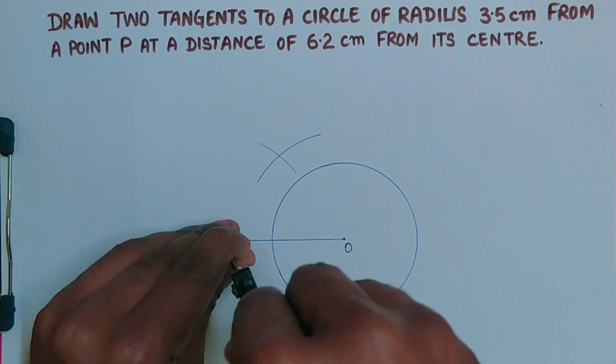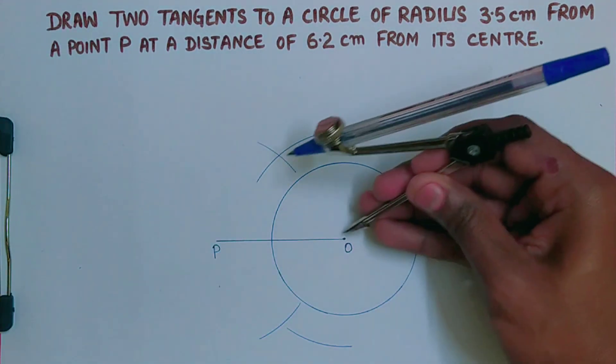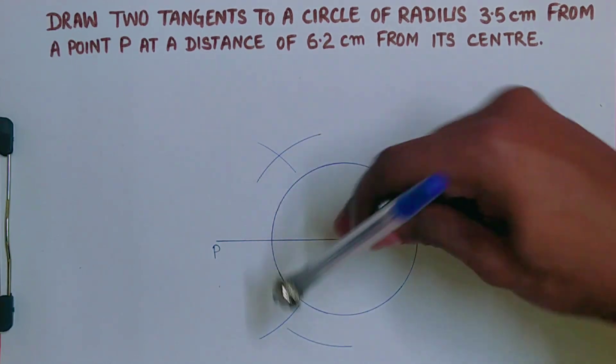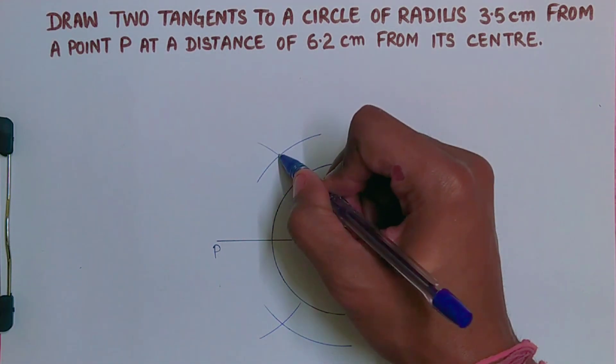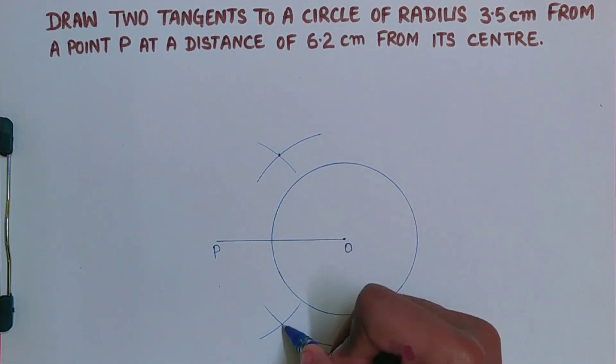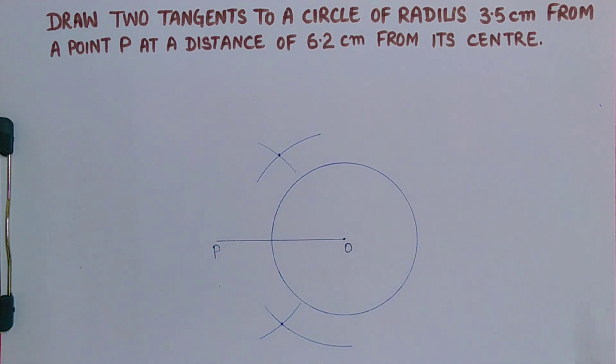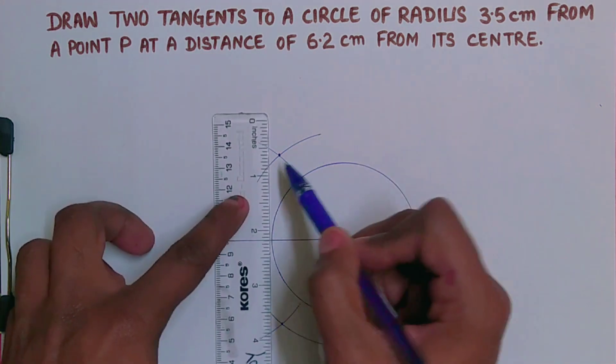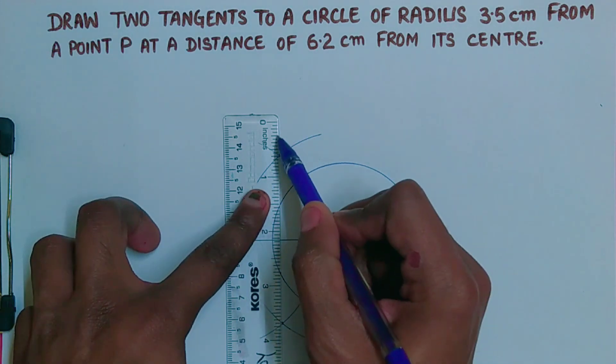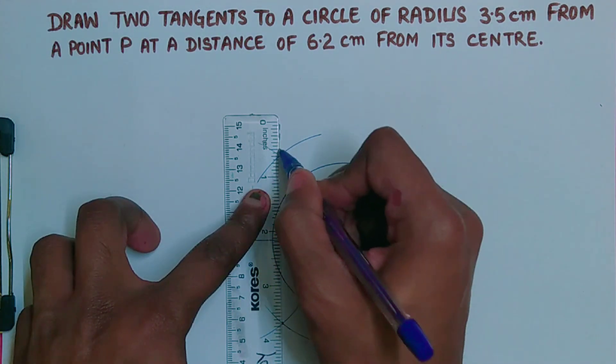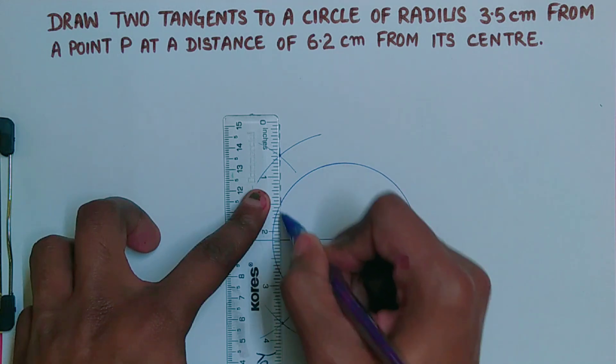Now you got two points and these two points you have to join. Either you can use dotted line or you can directly join these two points.